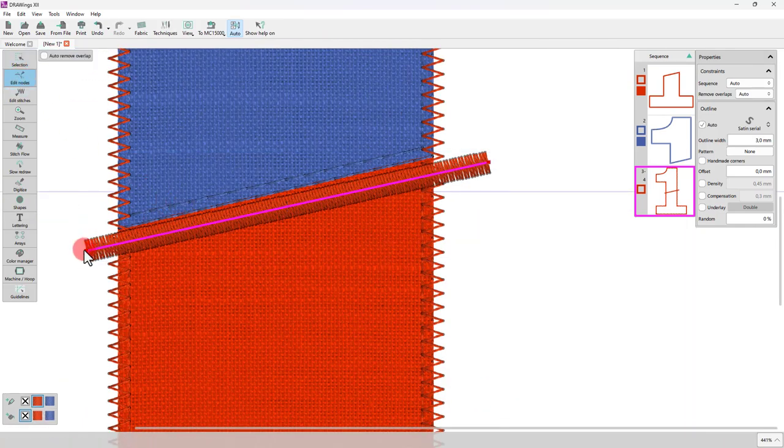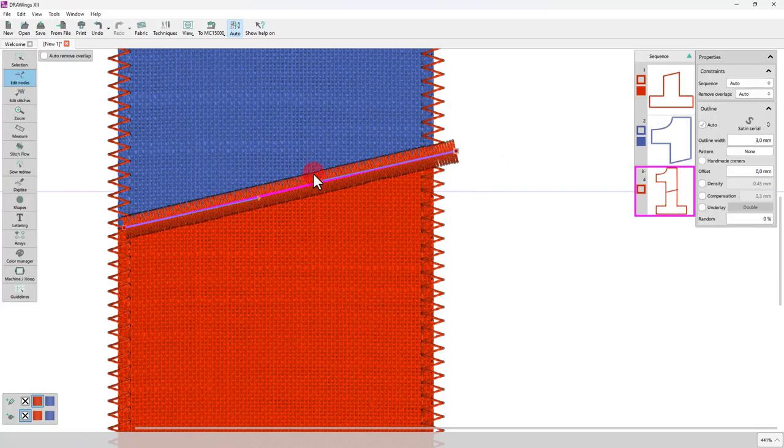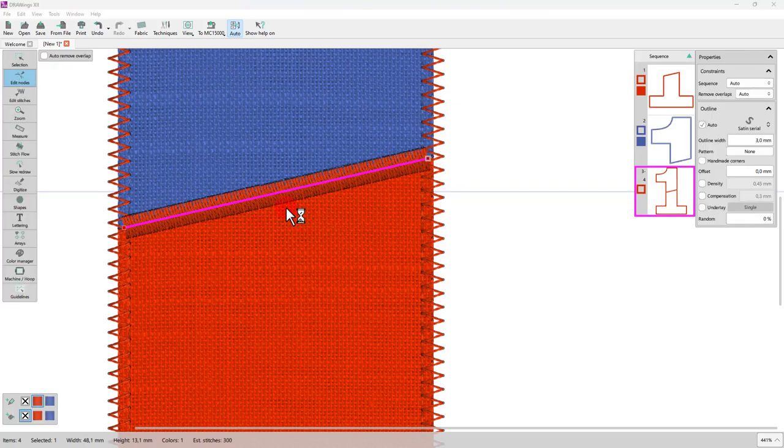If necessary, edit this line using the Node Editor so that it matches the initial one. Again, for this line set the type to Satin Serial, the Outline Width to 3 mm and the Density to 2 mm.